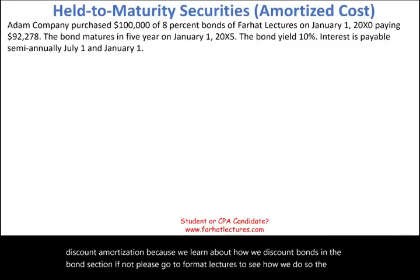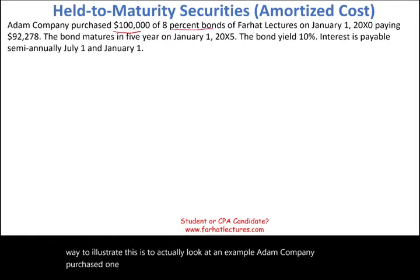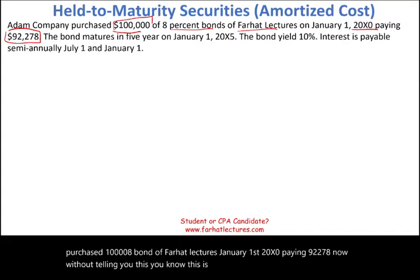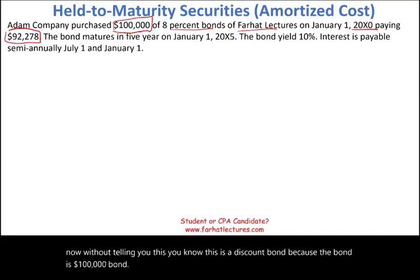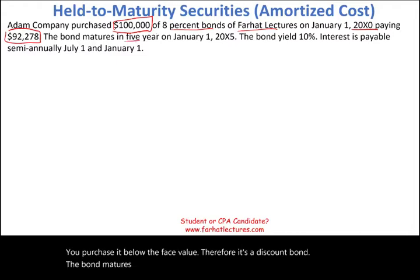The best way to illustrate this is to look at an example. Adam Company purchased a $100,000, 8% bond of Farhat Lectures on January 1st, 20X0, paying $92,278. Without being told, you know this is a discount bond because the bond is a $100,000 bond and you purchased it below the face value. The bond matures in five years on January 1st, 20X5.